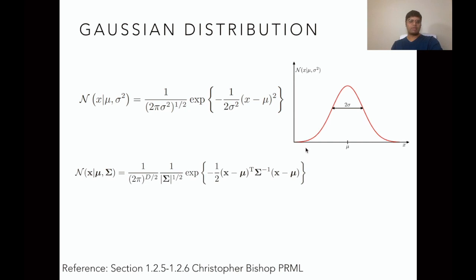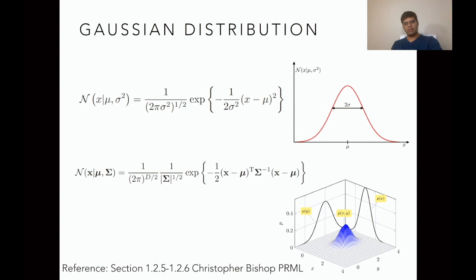We can extend this definition to the multivariate Gaussian case where x is no longer a scalar — it is a vector, and mu the mean is also not a scalar now, it's a vector. Similarly, the covariance matrix represents the variance in each pair of dimensions. Looking at the bivariate Gaussian, it is composed of two random variables x and y. It has a nice 3D structure and when you take projections in one direction it gives you nice Gaussian curves.